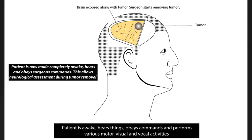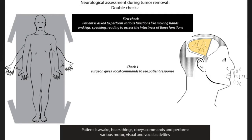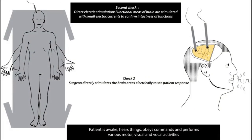Now the patient is made completely awake — they hear and obey the surgeon's commands, allowing neurological assessment during tumor removal. The neurological status is doubly checked during tumor removal. First, the patient is asked to perform various functions like moving hands and legs, speaking, and reading to assess the intactness of these functions. Second, the surgeon directly stimulates the functional areas with small currents to check the intactness of these areas as the tumor resection progresses.